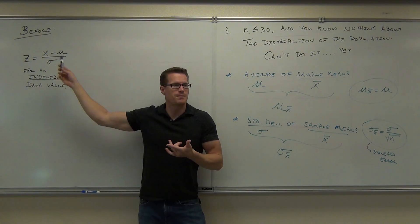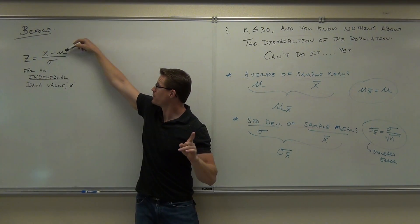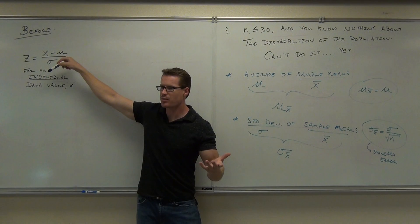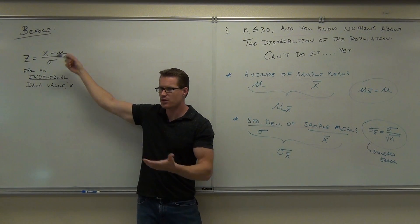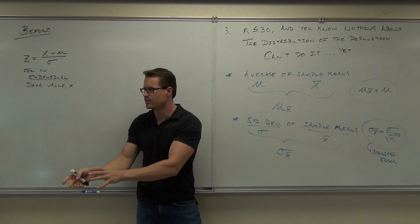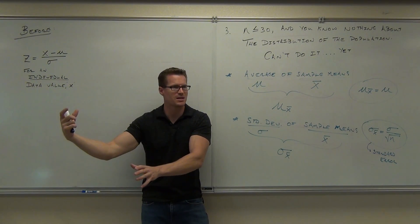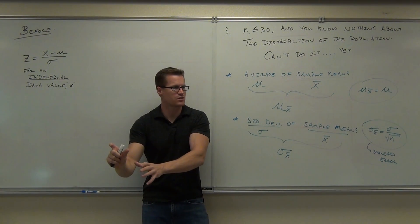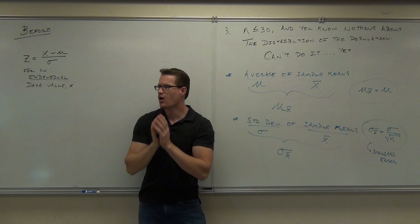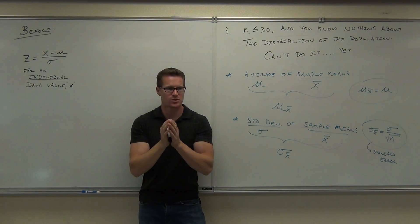But in order to compare a single data value, you have to know the population mean and the population standard deviation. That's the problem. So if you take a sample, you'd still have to know the mean and the standard deviation for the whole population to place that one value on the standard normal distribution.